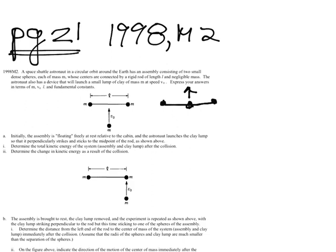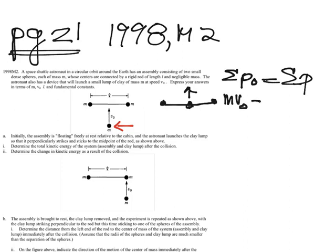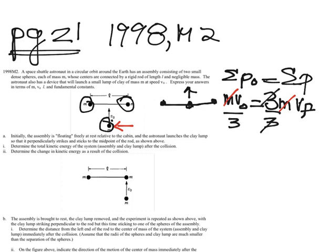The answer is that between these two pictures, only momentum is going to be conserved. So we have ΣP₀ = ΣP. At the beginning, only the clay ball is moving, so we have MV₀. At the end, we have 3M all stuck together — M here, and these two — so we have 3M times VF. To solve for VF, we cancel our M's and divide by 3 to get VF = V₀/3.